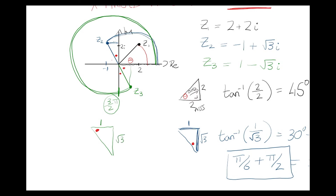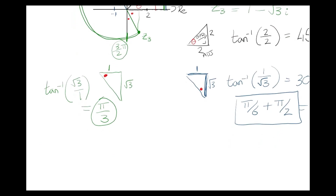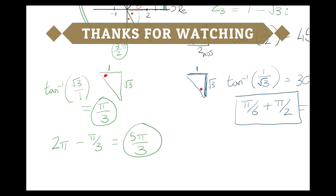For the small red angle, tan inverse of root 3 over 1 gives 60 degrees, which is pi over 3. But I don't want that small angle — I want the full anticlockwise angle from the positive real axis. So the argument is 2 pi minus pi over 3, which equals 5 pi over 3. That's the argument for z3. Sticking to the positive real axis is definitely one of the trickier aspects.